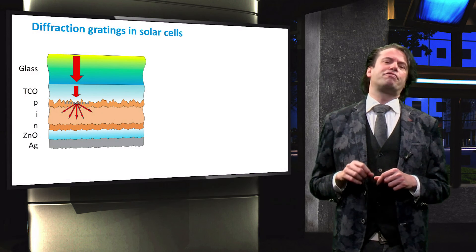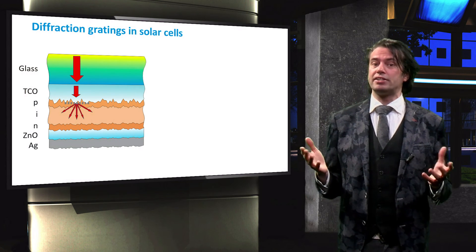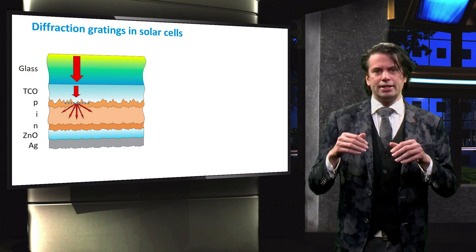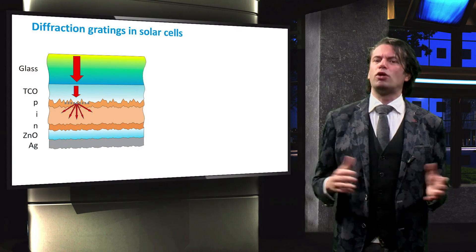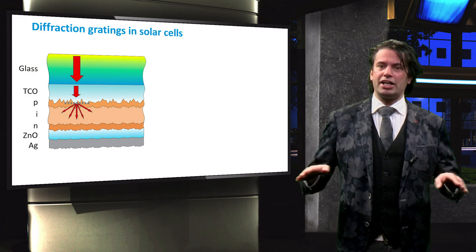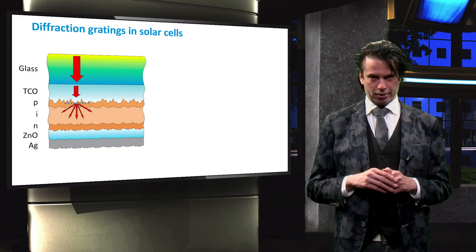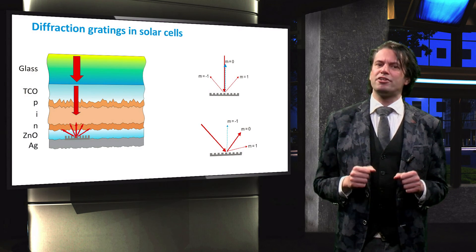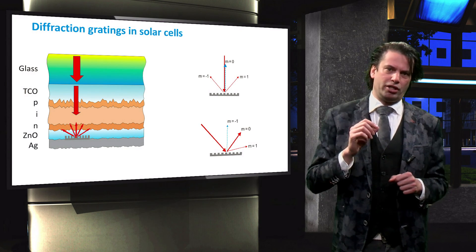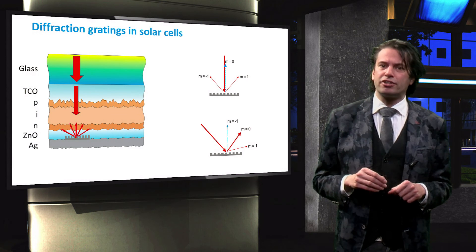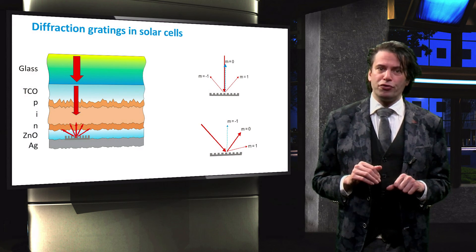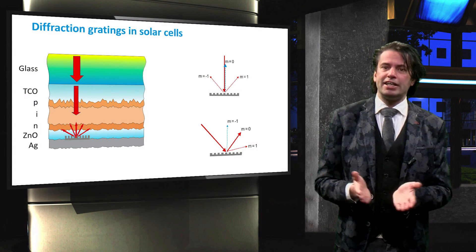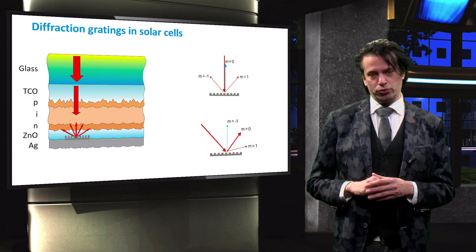To that end, diffraction gratings can be integrated into the front of the solar cell as shown in this illustration. Light incident normal to the surface will be transmitted under large angles into the absorber layer. Alternatively, diffraction gratings can be integrated into the back of the solar cell, where the diffraction grating is placed at the front of the backreflector. The light will then be reflected into large angles back into the solar cell.